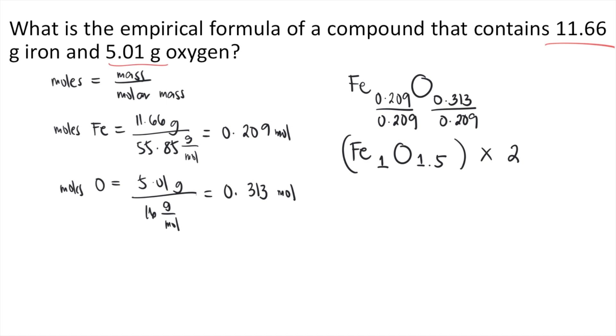So if we do that, for Fe, 1 times 2 is 2. For oxygen, 1.5 times 2 is 3. So the empirical formula and the answer to this question is Fe2O3.